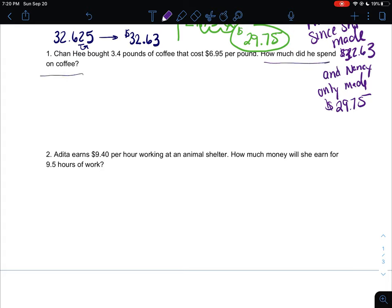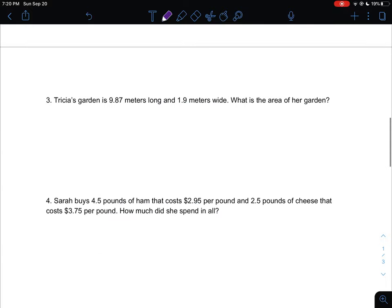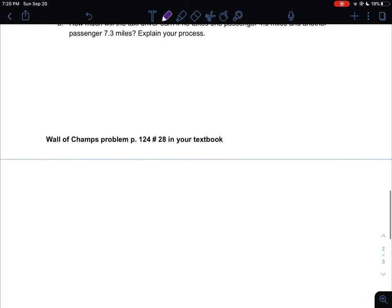Your answer should be in a complete sentence. So for number one, how much did he spend on coffee? You would say that Chan Hee spent such and such money on coffee. Full sentence. I need one under each question.